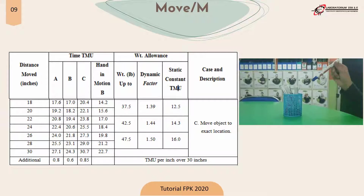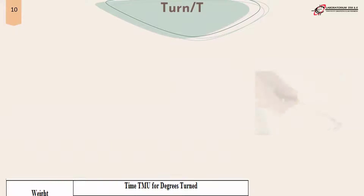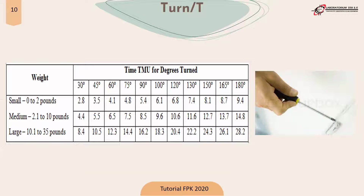The next motion element is turn — this refers to turning the hand, not the object. For example, using fingers such as finger and thumb includes a turn movement. For the determination of the degree, you can estimate it during practice. You need to determine how many times you turn your hand, and multiply by the TMU value determined by the estimated degree.